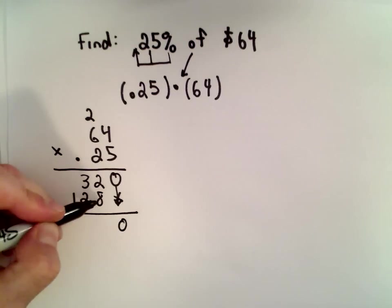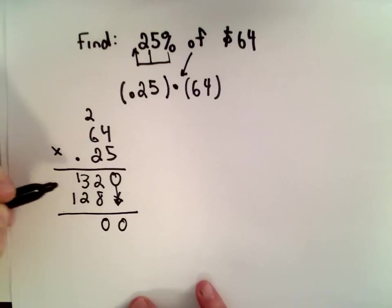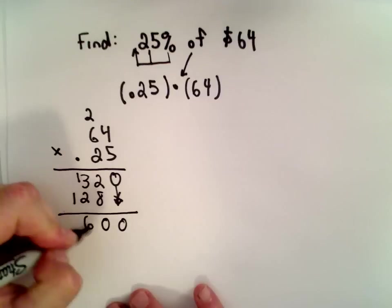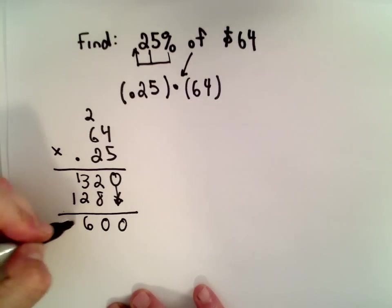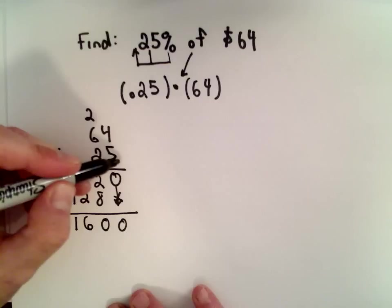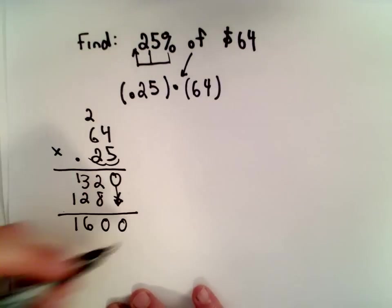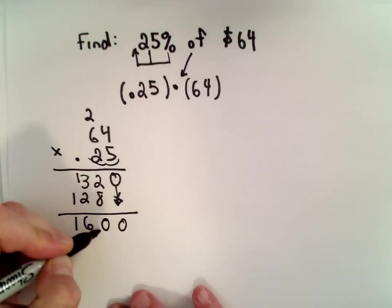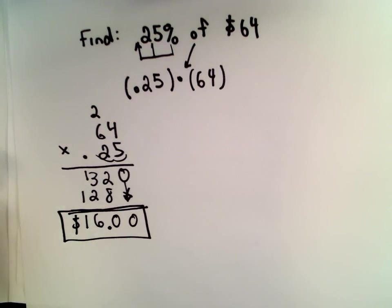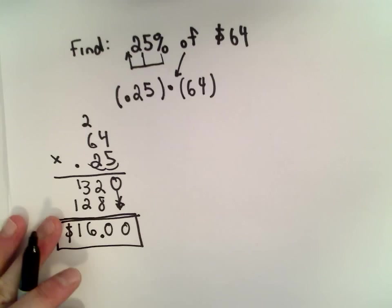0. We've got 2 plus 8. That's 10. So, we'll carry the 1. 1 plus 3 is 4. 4 plus 2 is 6. We'll just drop the 1 down since there's nothing to add to it. Notice I've got a decimal place. Two places over. So, that means from here I count two places over. And, lo and behold, we get the value of 16. So, it says $16 off is what they're going to take at the register. That's one way to do it.